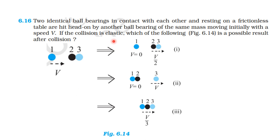From the topic Work, Energy, and Power, let us continue. Two identical ball bearings in contact with each other and resting on a frictionless table are hit head-on by another ball bearing of the same mass moving initially with a speed v. If the collision is elastic, which of the following is a possible result after the collision?